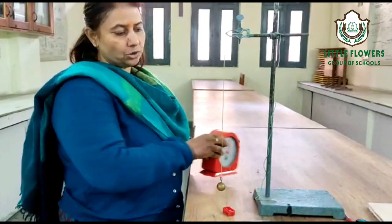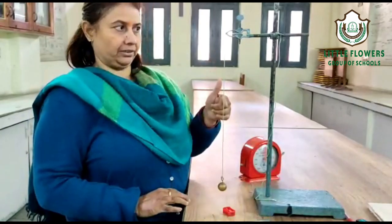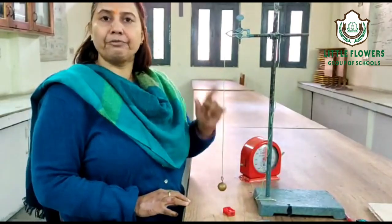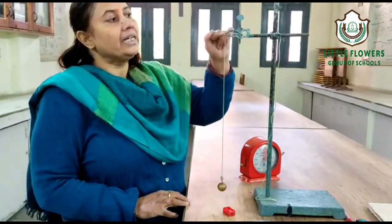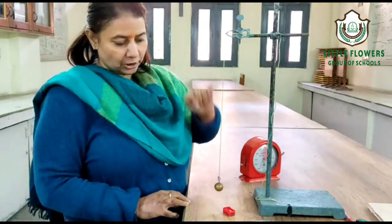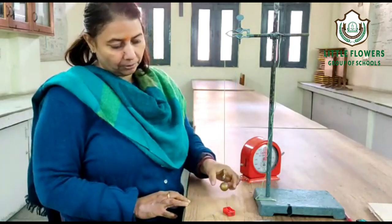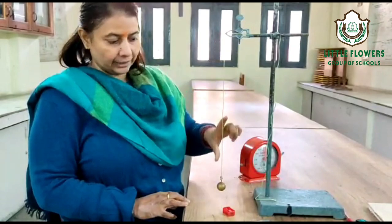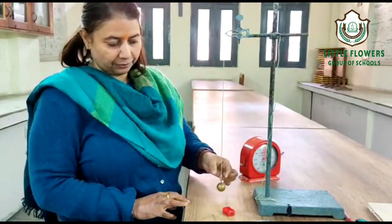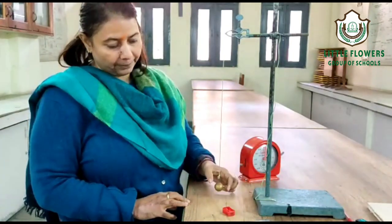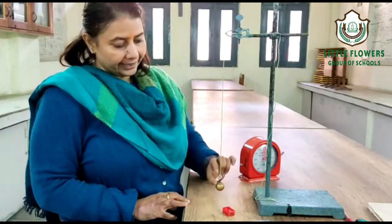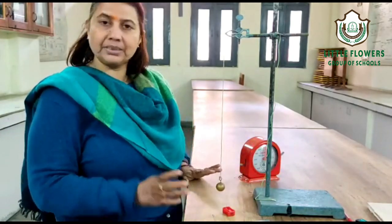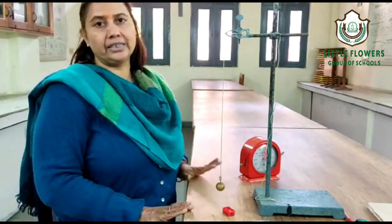First of all, we need to find the effective length. The effective length is the length from the point of suspension to the center of the ball. This includes the length of the string, plus the length of the hook, plus the radius of the ball. The radius of the ball can be calculated with the help of vernier calipers, as we have already learned in earlier practicals.